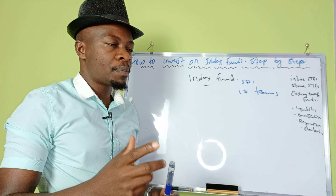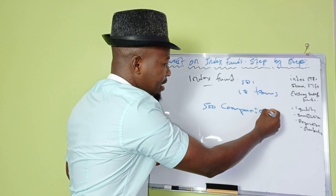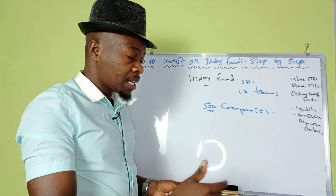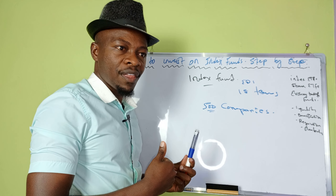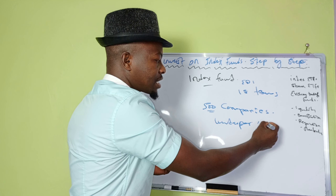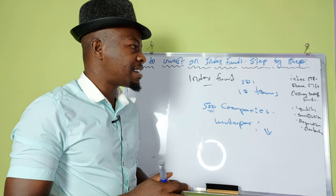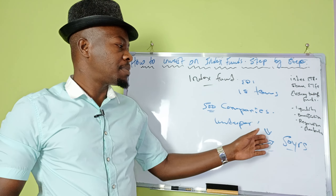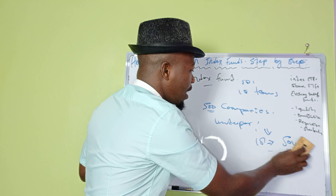Take the English Premier League — we have around 18 teams: Manchester United, Liverpool, Chelsea, and others. Instead of buying shares of a single team like Arsenal or Liverpool, you buy into the entire EPL, where all those teams are put together. That is what we call the index fund. This is why most people prefer to invest in index funds compared to individual stocks — because instead of relying on one company, you have 500 companies in a single basket.